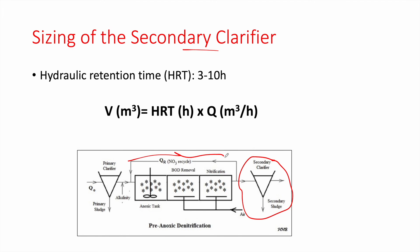Finally, design the secondary clarifier. Its volume is based on hydraulic retention time (HRT): the water needs to remain in the clarifier for 3 to 10 hours. Volume = HRT × flow rate (converted to m³/hour). A higher retention time gives better effluent quality but a larger, more costly clarifier. Always balance effluent quality against budget. That concludes this lecture — please like, subscribe, and keep following for more videos.